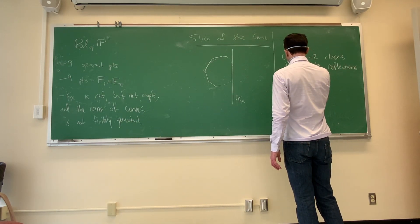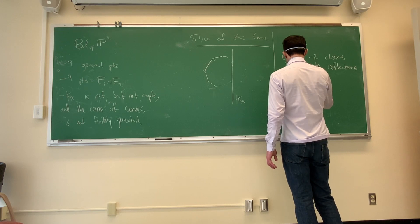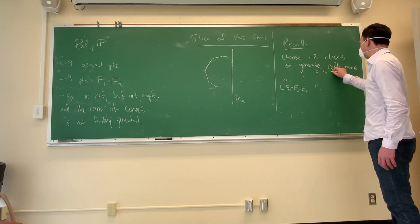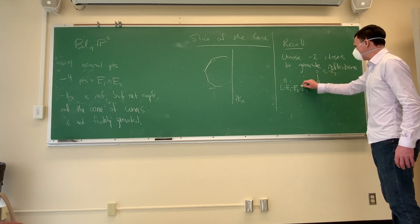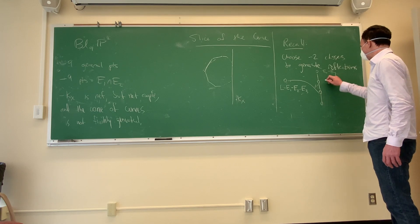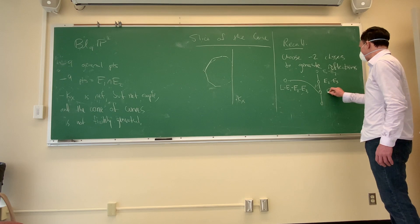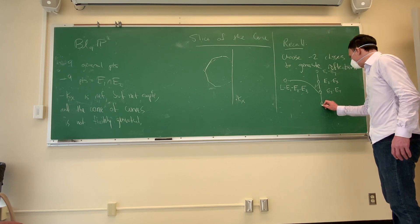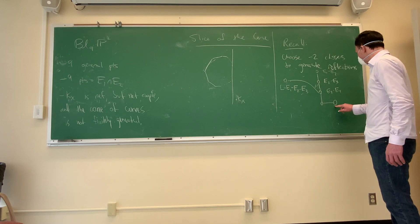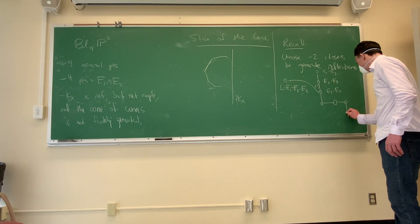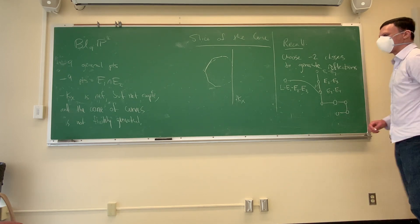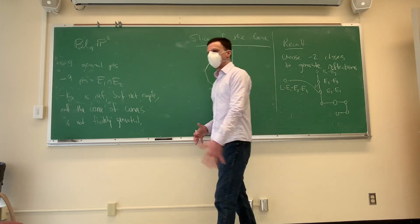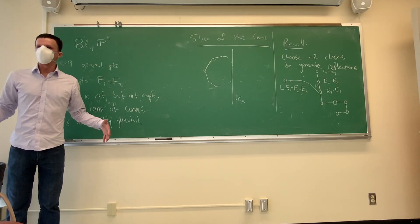The picture you get is: one node for L minus E₁ minus E₂ minus E₃ jutting off, and then E₁ minus E₂, E₂ minus E₃, E₃ minus E₄, linking up, then E₄ minus E₅, and so on: 5, 6, 7, 8, 9. If you straighten it out, it looks like the familiar diagram — if I eliminated this ninth node I would have E₈, but having the ninth one means this is not going to give a finite reflection group; it gives an infinite one.